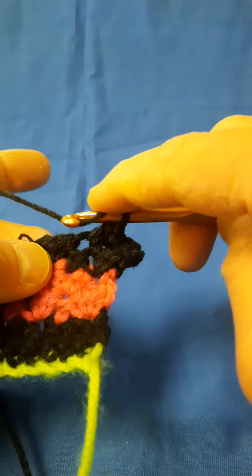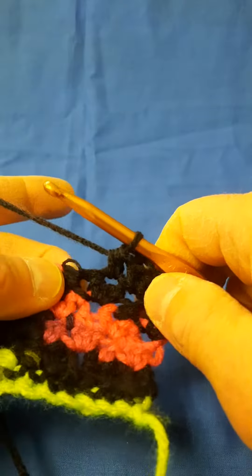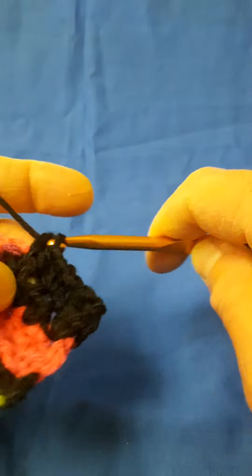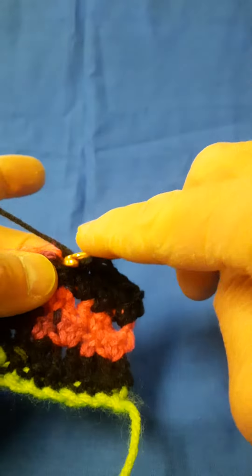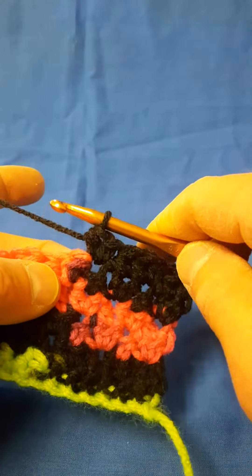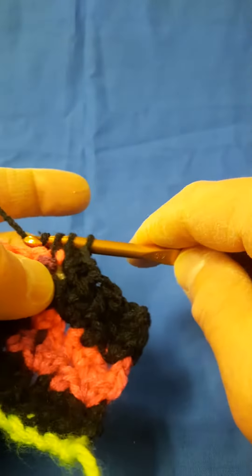And another half double in the next stitch. We'll skip the next and single crochet immediately following. This pattern is just going to keep going like this, and so we will just follow that pattern along.